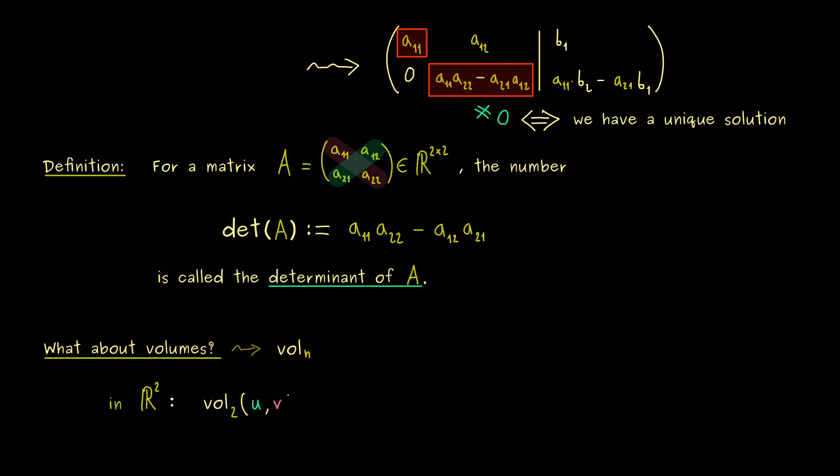So now imagine we have two vectors u and v in R2. Then we know they span a parallelogram. So this is not new, we could have u here and v there and then we see the parallelogram. Moreover, it has a well-defined area. In exactly this area the volume function should measure.